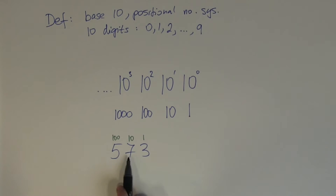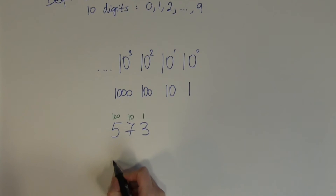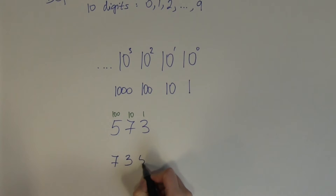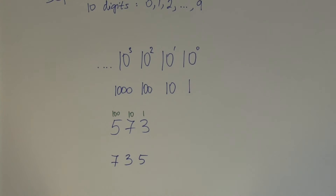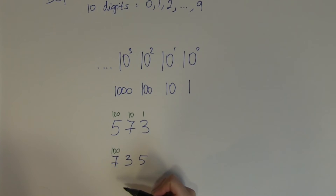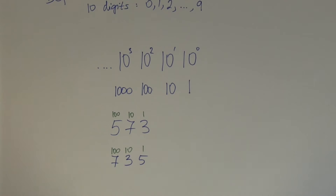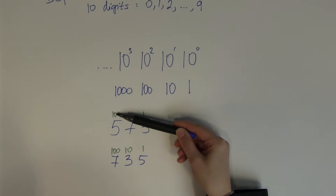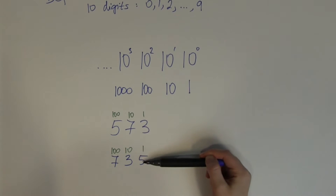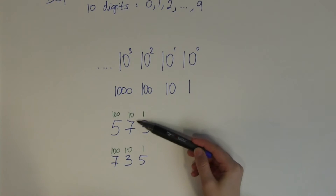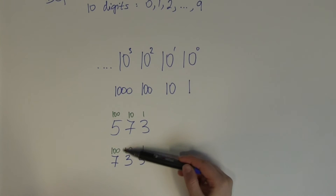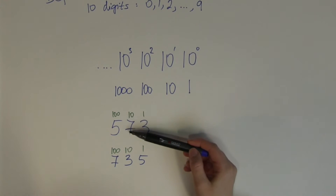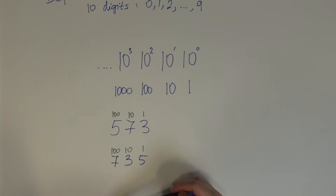Now what happens if I use the same three digits but in a different order — say, seven hundred and thirty-five? Well, 7 is now at the hundreds place, 3 is at the tens place, and 5 is at the units place. So depending on which position I place the digits, they represent different values. The 5 in the first number is 500, but in the second number it is just 5 units. The 3 in the first number is 3 units, but in the second it is 30, and the 7 in the first is 70 while in the second it is 700.